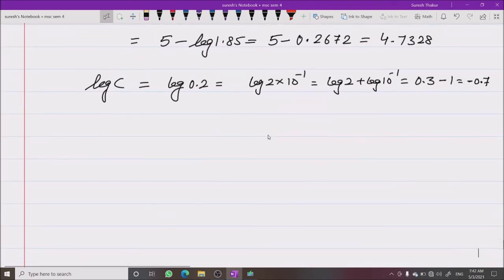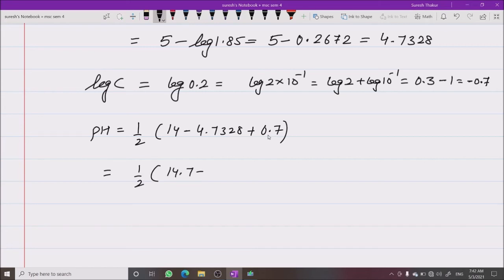Now put the values in the formula. pH equals half of 14 minus pKb minus log C. That's 14 minus 4.7328 plus 0.7. So half of 14.7 minus 4.7328, which equals 9.9672 divided by 2, giving us 4.9836.